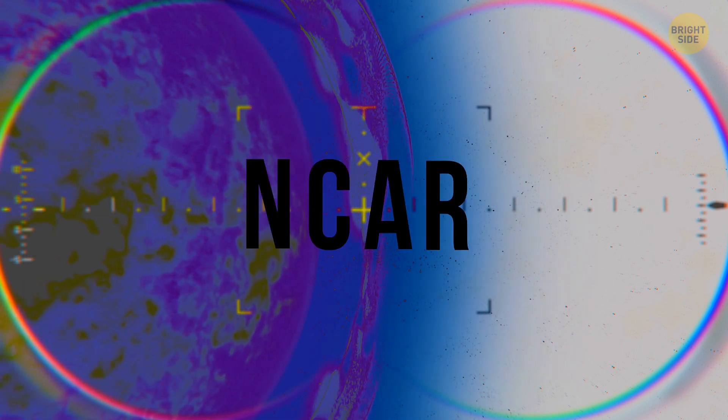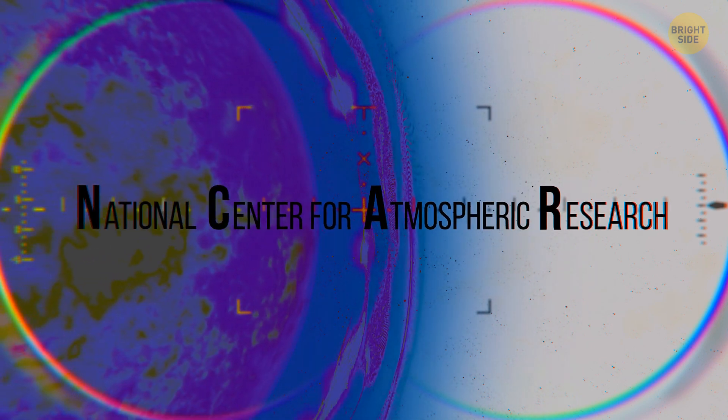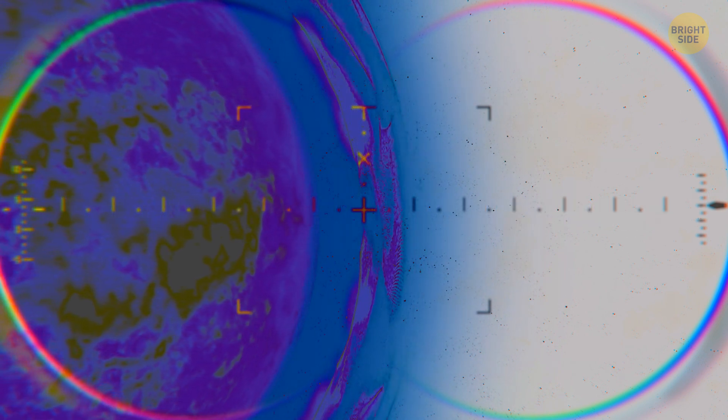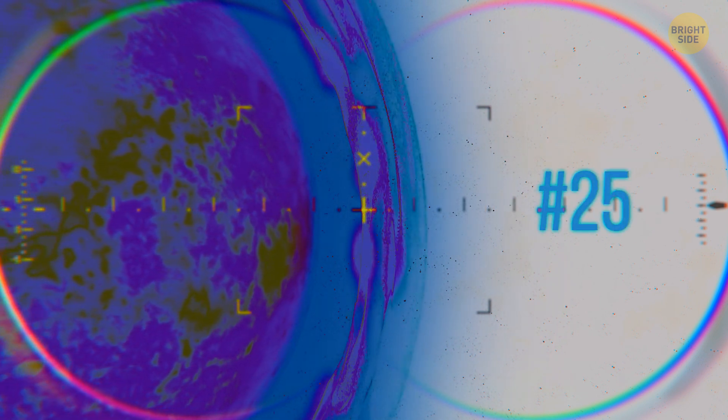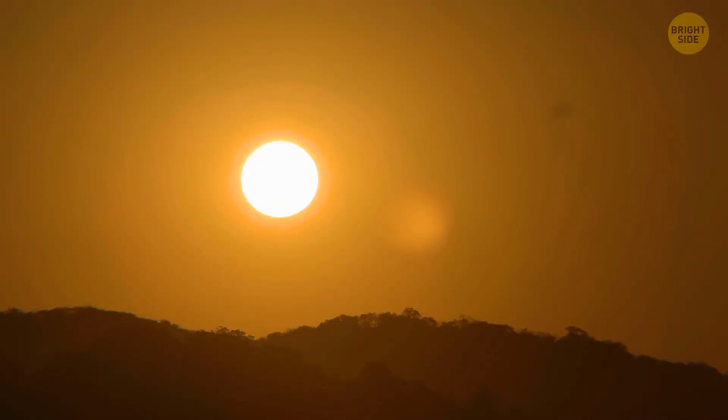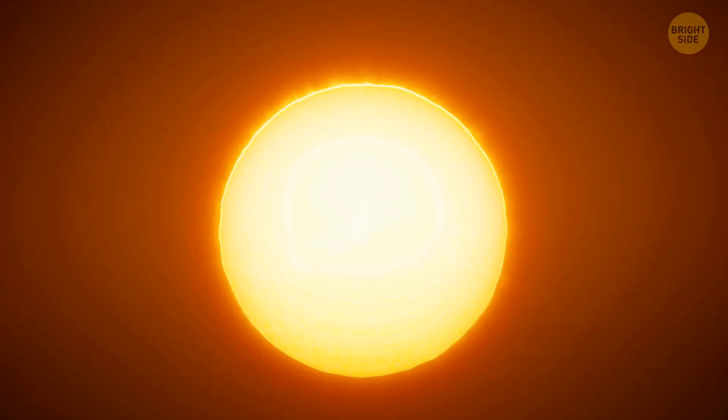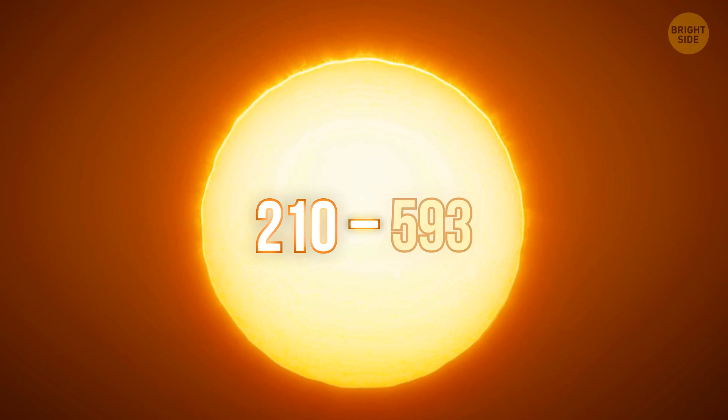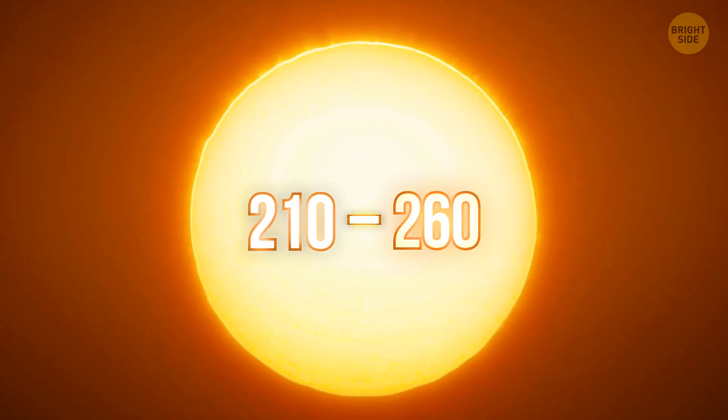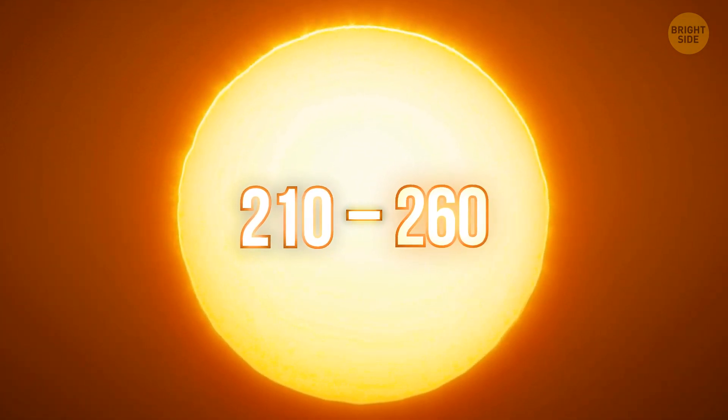The National Center for Atmospheric Research in Boulder, Colorado, is predicting that this solar cycle, cycle number 25, will be one of the strongest ever. The last solar cycle was very calm, with a sunspot count of only 116. The average is 170. But the prediction for this cycle is between 210 and 260 sunspots, which would be one of the strongest cycles ever.